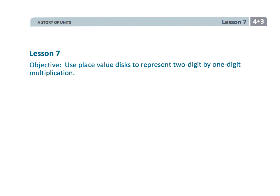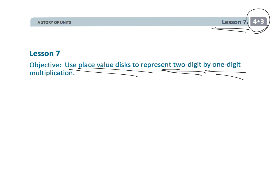That wraps up 4th grade module 3 lesson 7, where we used place value disks to multiply 2-digit by 1-digit problems. We're not quite using the standard algorithm yet — we're using partial products — but eventually we're going to be getting to that standard algorithm.